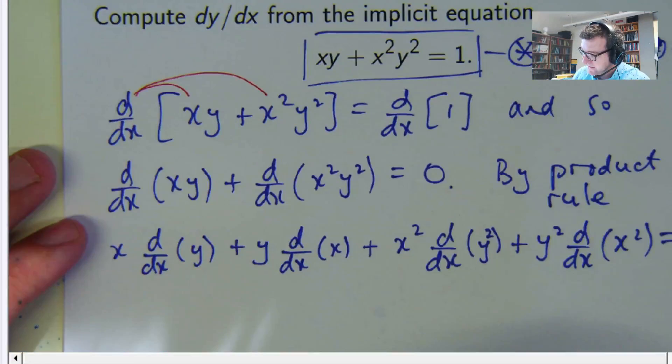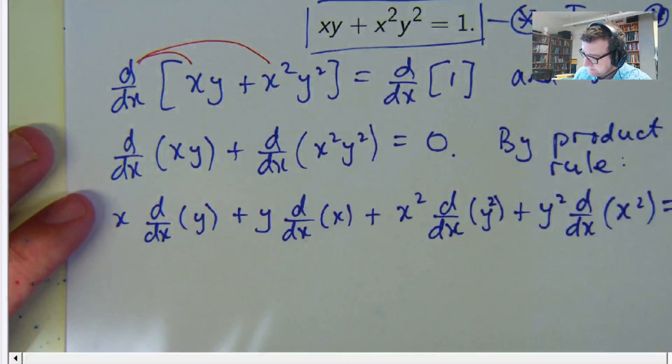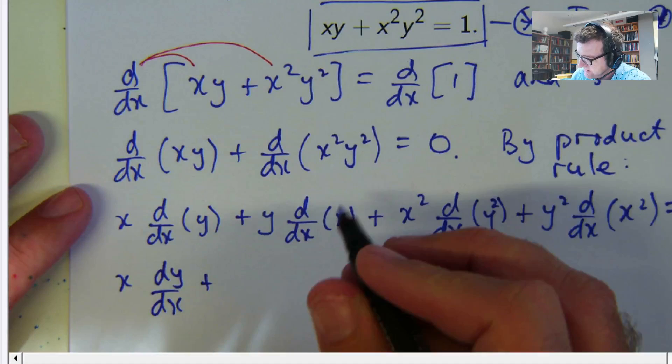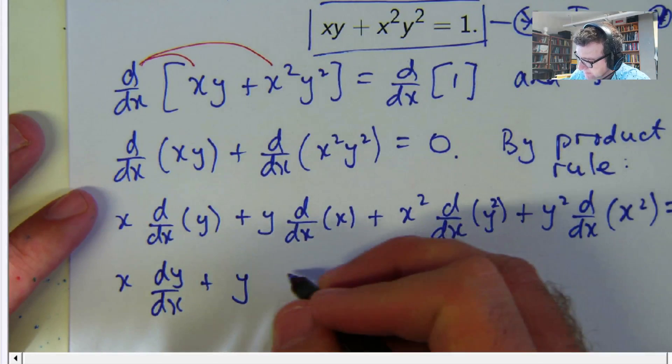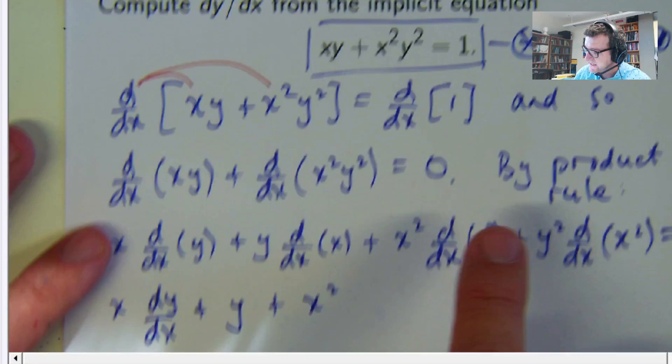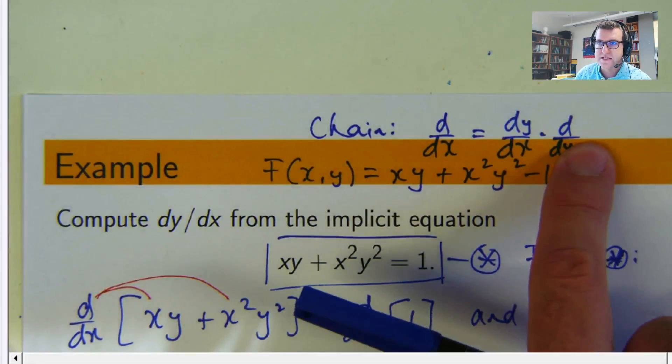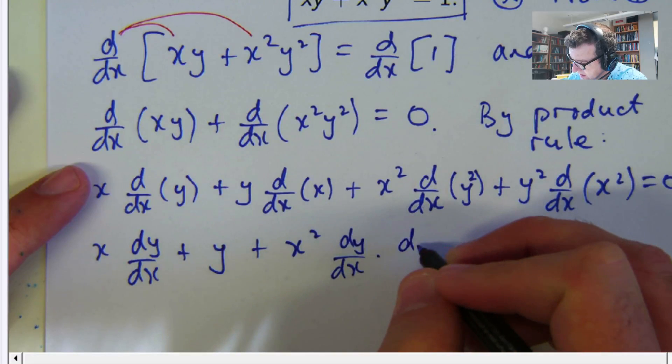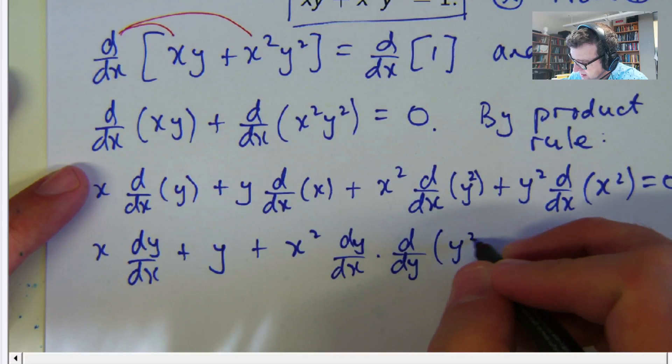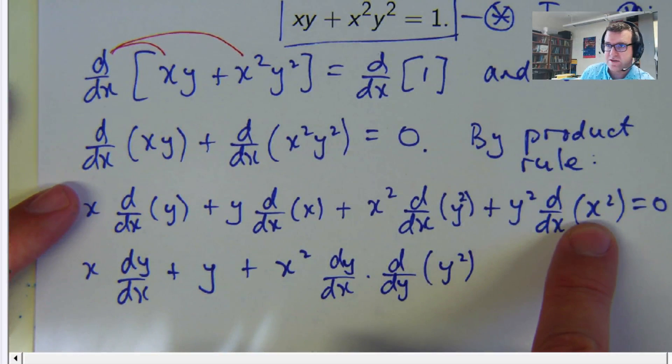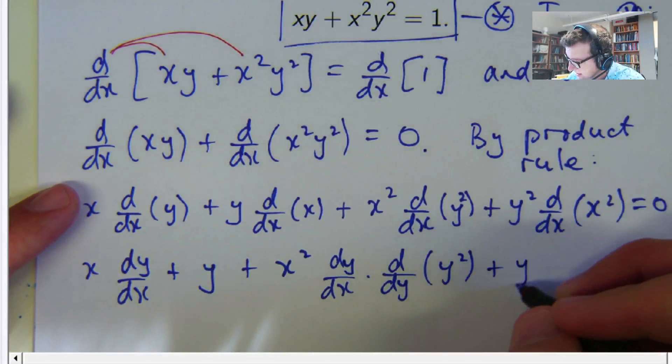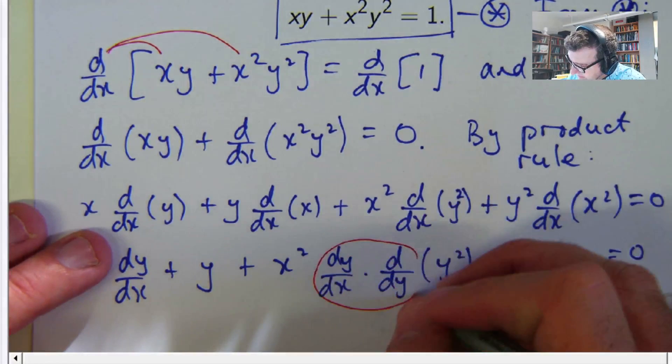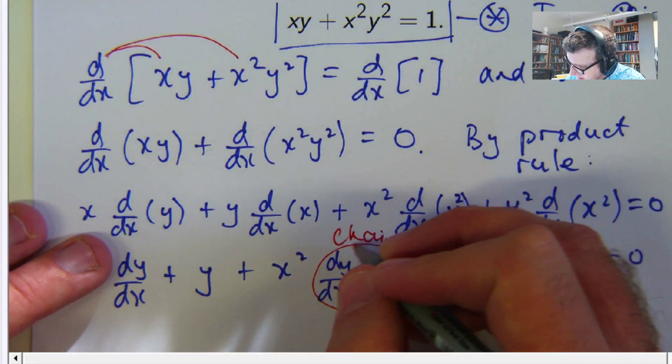Alright, so we can use that to our advantage here. So we can write this big mess out. So let's continue. This is going to be one. Now this, let's write d/dx as dy/dx times d/dy. And this over here, d/dx of x squared is going to be 2x. So here, we've used the chain rule.